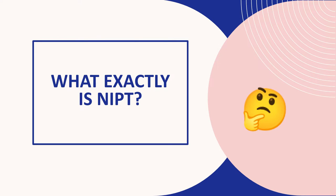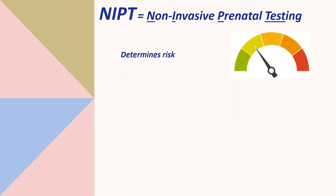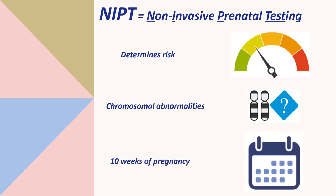What exactly is NIPT? Well, noninvasive prenatal testing is a method of determining the risk of whether or not the fetus will be born with the most common chromosomal abnormalities, such as Trisomy 13, Trisomy 18, and Trisomy 21, from as early as 10 weeks of pregnancy.